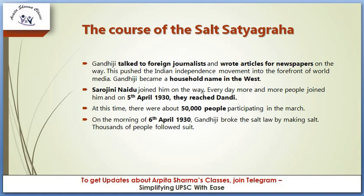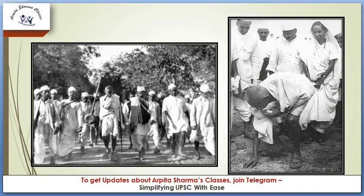Sarojini Naidu joined him on the way, and every day more and more people joined the march. On 5th April 1930, they reached Dandi with about 50,000 people participating. On the morning of 6th April 1930, Gandhiji broke the salt law by making salt, and thousands of people followed suit.